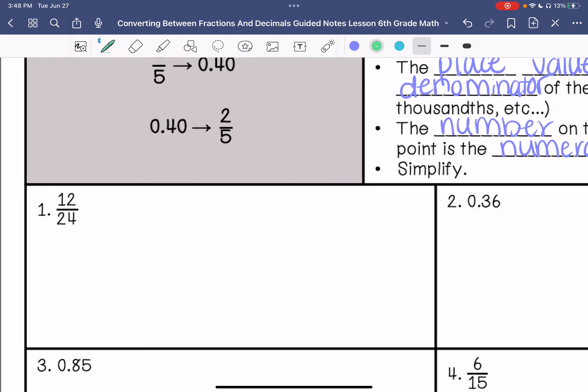Number one, we are going to simplify if possible. We can divide these both by two. Actually, we can divide these both by twelve. So this is one half. Then we would do 1 divided by 2. My decimal is 0.5, or 0 and five tenths.